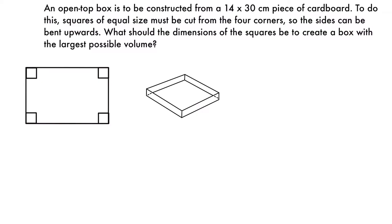Let's take a look at our two diagrams here. We have a diagram of our cardboard and the squares that we're going to be cutting out of it. If you imagine cutting those squares out, you'd be left with a plus-shaped piece of cardboard, and then folding up each of the flaps along the edges, you would have the box shown on the right.